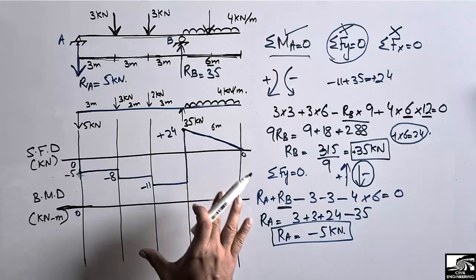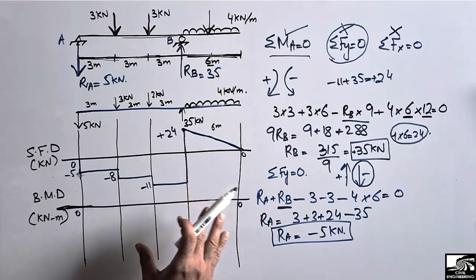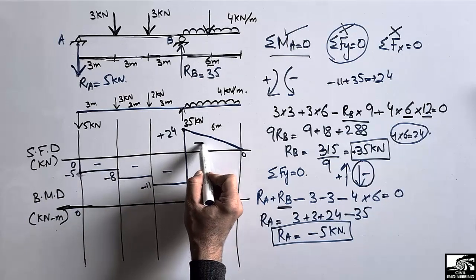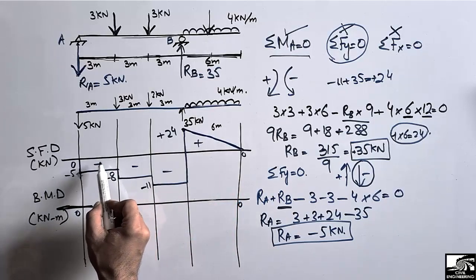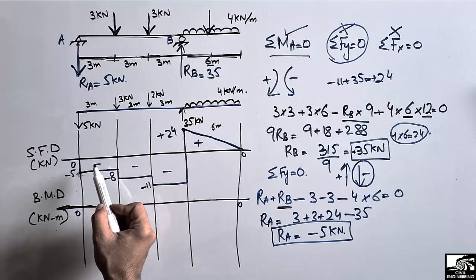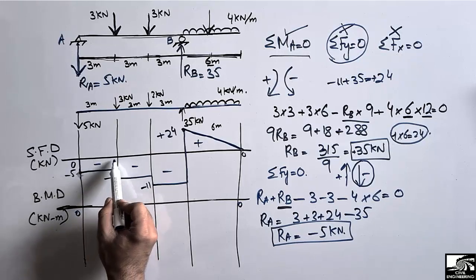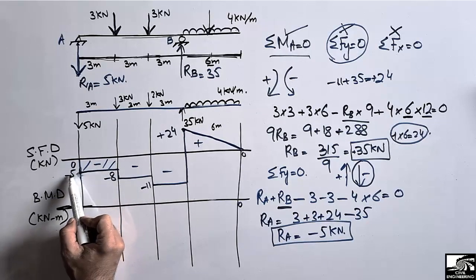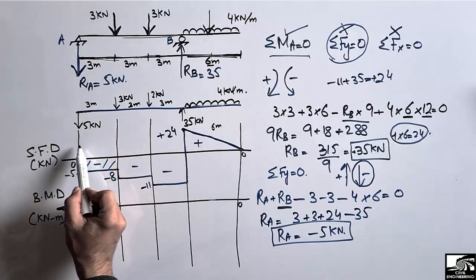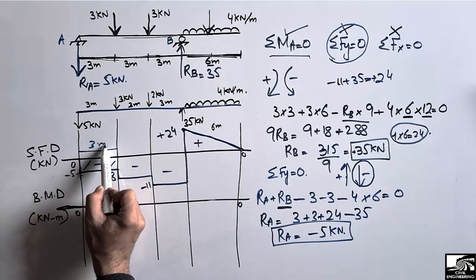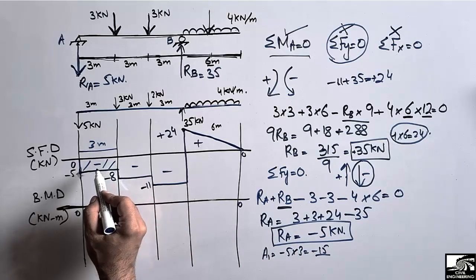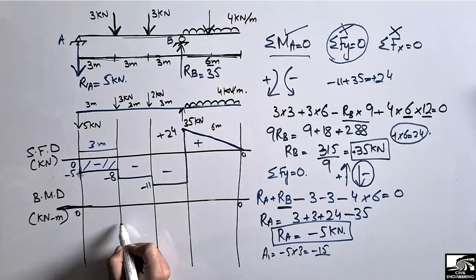To draw the bending moment diagram, we use the areas of the shear force boxes. The first rectangle has a height of −5 kN and width of 3 meters. Its area A1 = −5 × 3 = −15 kN·m. So the bending moment at the end of the first segment is −15 kN·m.